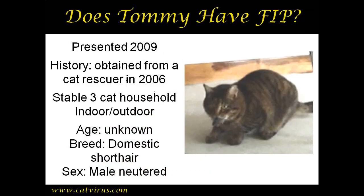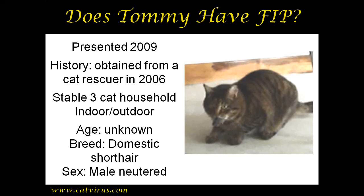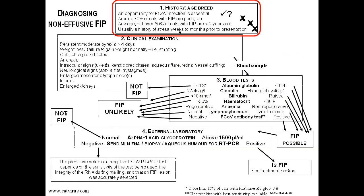Let us have a brief recapitulation. Tommy was an adult male neutered domestic short hair presented in 2009 with anisocoria. In part two of this video series we examined in detail his history to establish whether or not FIP should be on our list of differential diagnoses. The result was mostly negative. There was a query around whether or not he could have become infected with feline coronavirus, because in 2006 he had come from a rescue household of 28 cats and at the time of presentation he was living in a three cat household.